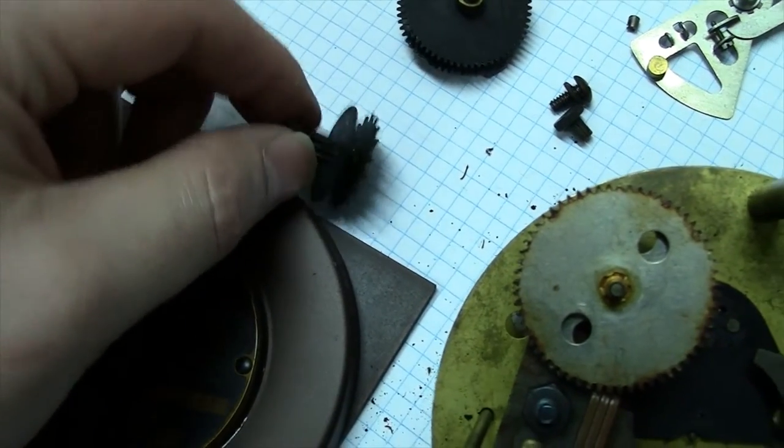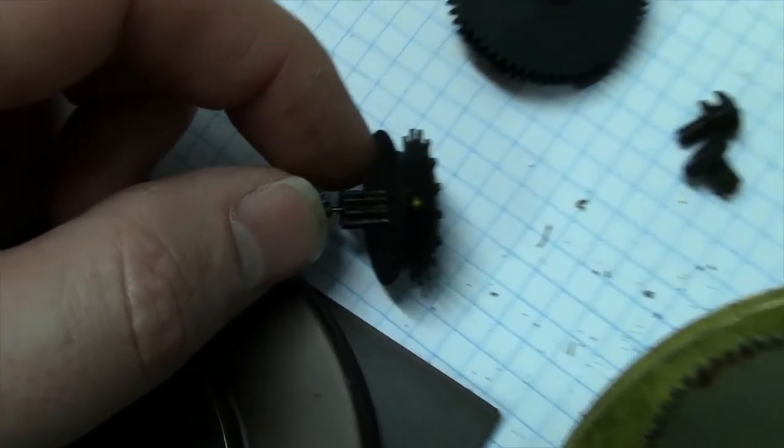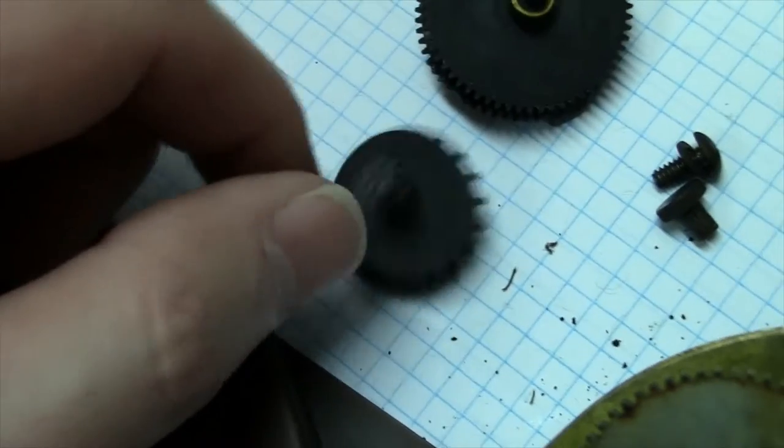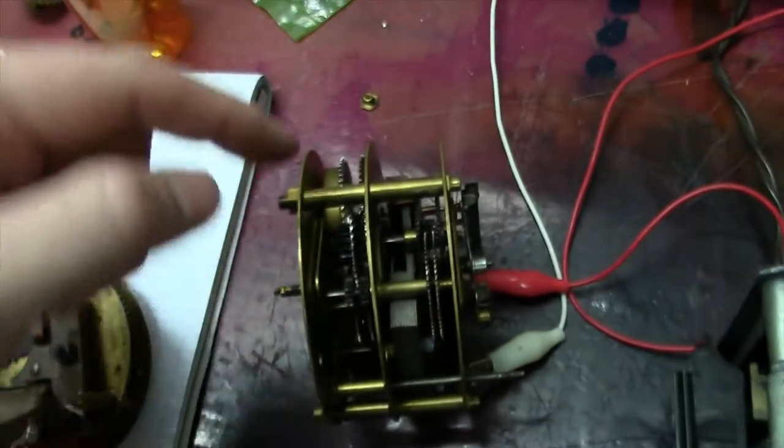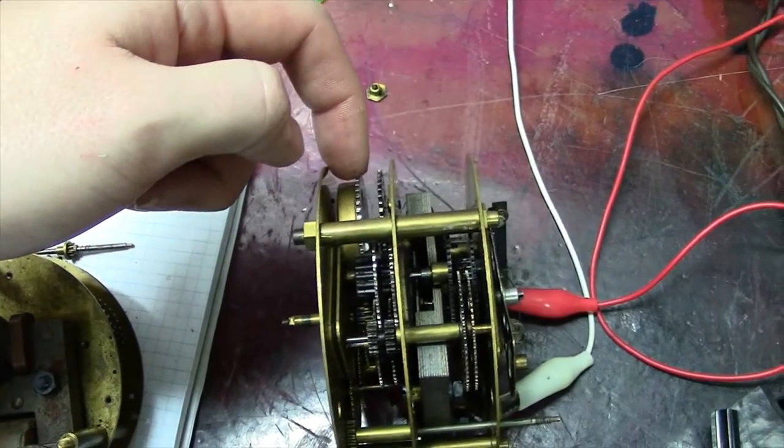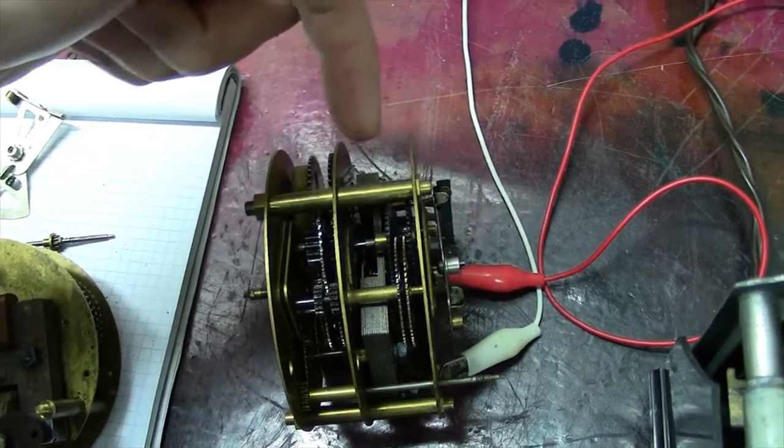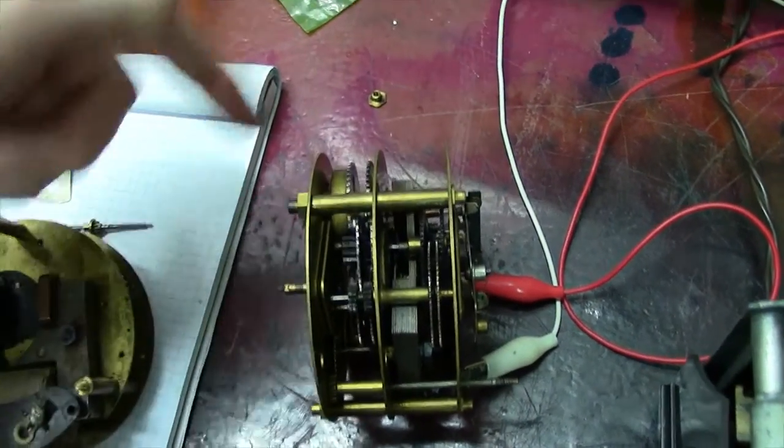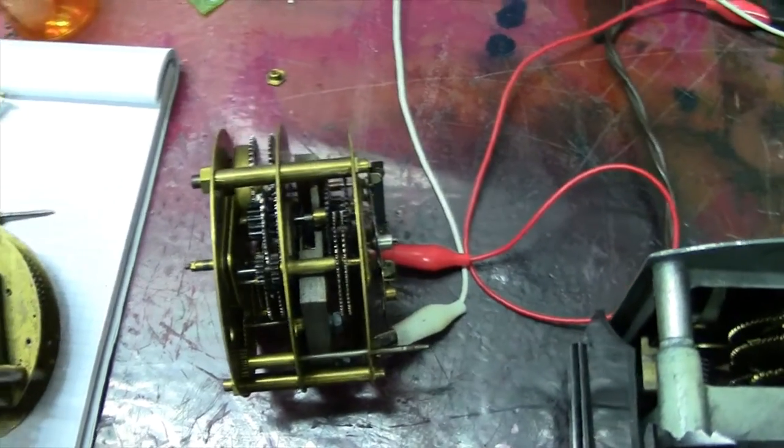But basically, this is on a shaft. These are two separate parts. I can turn that one separate from the actual brake. And what that does is that brake actually helps keep this gear here from turning until it breaks the strength of that electromagnetic field on that brake and allows it to turn so it doesn't overwind. Really cool concept.